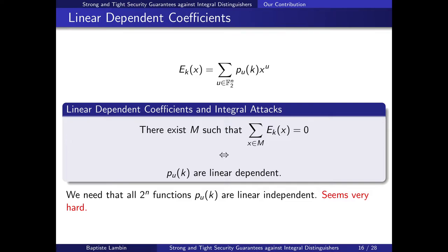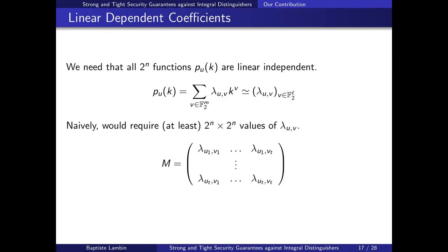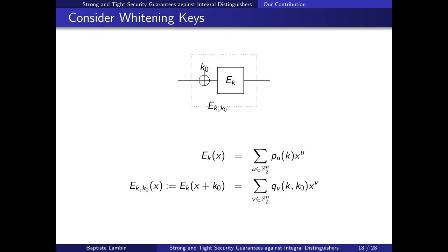This seems very hard: each polynomial can be developed as a sum of lambda_{u,v} times k^v, and each polynomial has about 2^n coefficients. We have 2^n polynomials, so we would need to compute a 2^n × 2^n matrix and show it is full rank. For modern block ciphers where n equals 64, this is an absolutely impractical number. So we need to do something smarter, and to do so we use a whitening key.